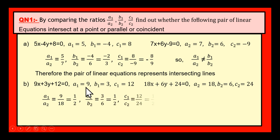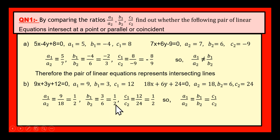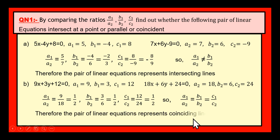Now let us find the ratios. A1 by A2: 9 by 18 — cancel 9, giving 1 by 2. B1 by B2: 3 by 6 — cancel 3, giving 1 by 2. C1 by C2: 12 by 24 — giving 1 by 2. So A1 by A2 equals B1 by B2 and also equals C1 by C2. If all three ratios are equal, then the lines are coinciding lines. Therefore, the pair of linear equations represents coinciding lines.